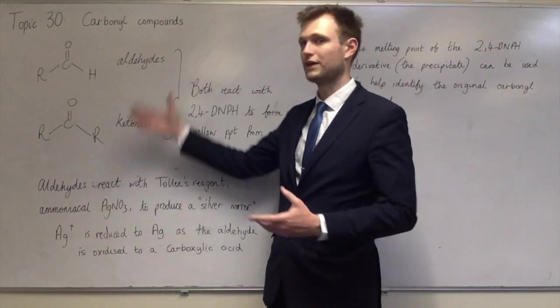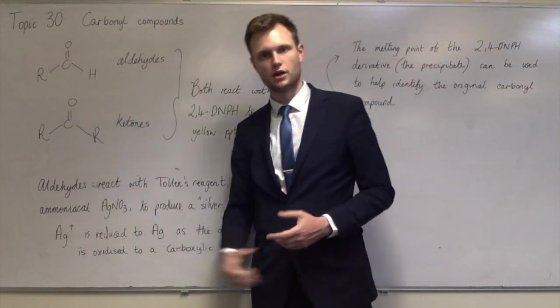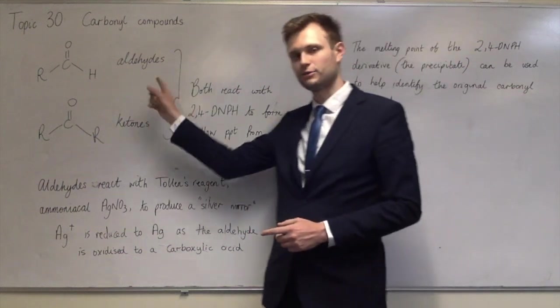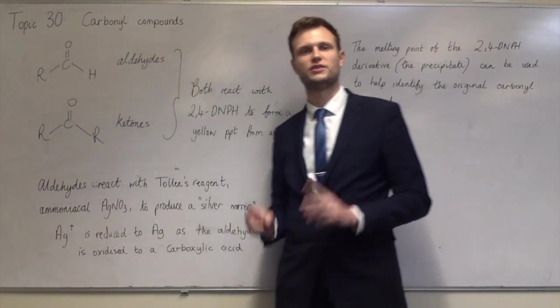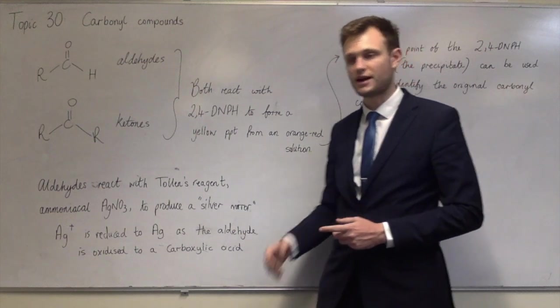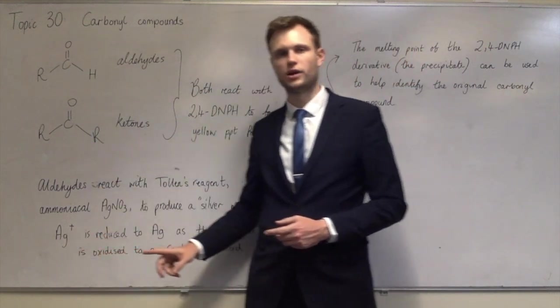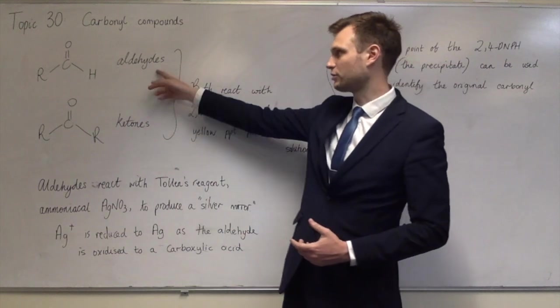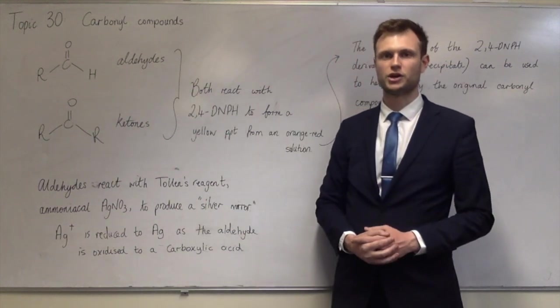The second test is if you know you've got an aldehyde or a ketone, but you don't know which, you can use Tollens reagent. Tollens reagent will react with aldehydes only to produce a silver mirror by reducing Ag+ to Ag, which makes it a silver. Only aldehydes do that, because only aldehydes can be oxidized.